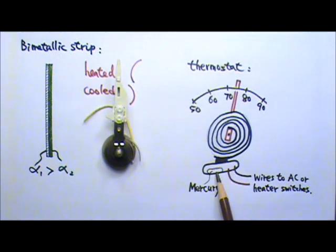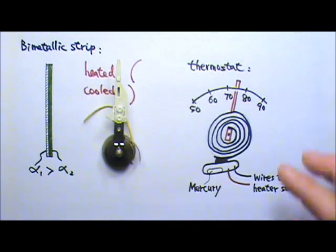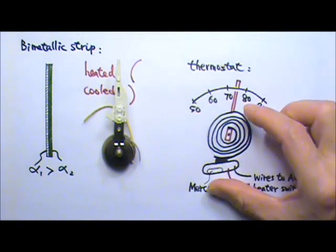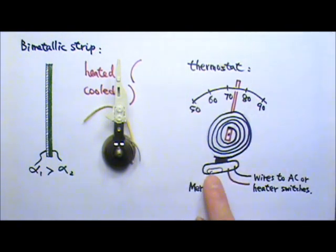In this position, the mercury on this side does not conduct any electricity between the two. But when the curvature changes enough, so this tube tilts enough, and the mercury flows that way, covers the two leads on this side, it conducts electricity between the two and sends the signal, and these wires go to the AC or heater switches, so it can turn the AC or heater on or off.